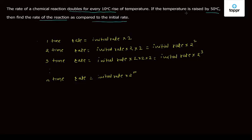In our question, it is given that temperature is raised by 50 degree Celsius and rate doubles for each 10 degree rise in temperature. So number of times this is going to happen is 50 by 10, which is five.